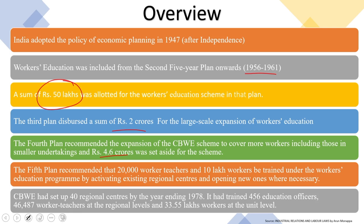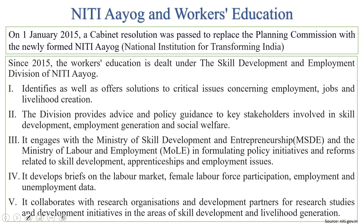The fifth plan recommended that 20,000 worker teachers and 10 lakh workers be trained under the workers education program by activating existing regional centers and opening new ones wherever deemed necessary. CBWE had set up 40 regional centers by the year ending 1978. It had trained 456 education officers, almost 46,000 plus worker teachers at the regional level, and almost 33.55 lakh workers at the unit level.